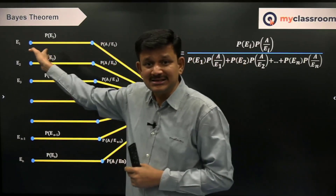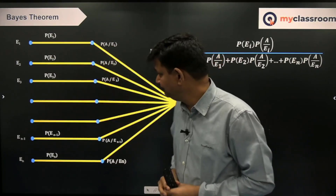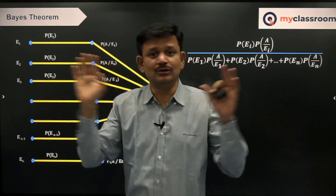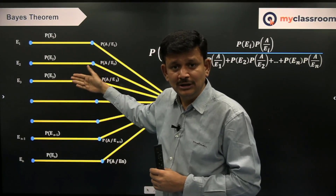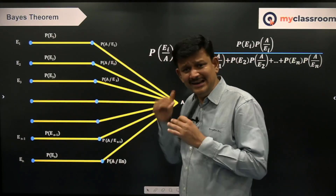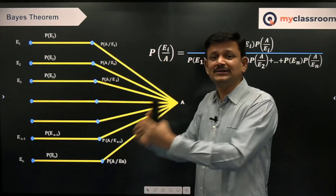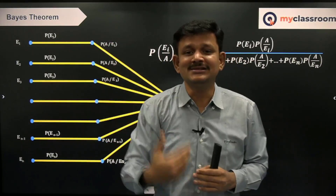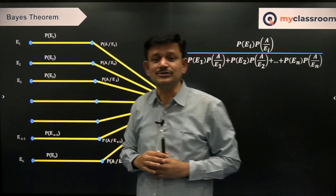Friend is traveling from 1 to 2 — it could be from any one of the N roads. We do not know which route he is going to choose. He can choose road number 1 with probability P(E1), road number 2 with probability P(E2), road number 3 with probability P(E3), so on, road number N with probability P(EN). Let us say you got a bad news call from him that he met with an accident, and before he communicates something, the call got disconnected. Now you have to make a guess whether it would have happened on E1 or E2 or E3 or EN. This is a classic question on Bayes' Theorem.